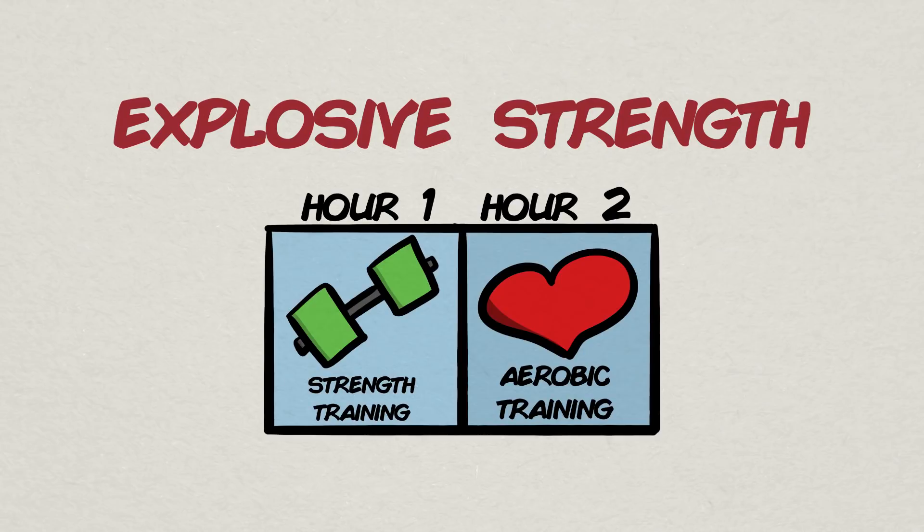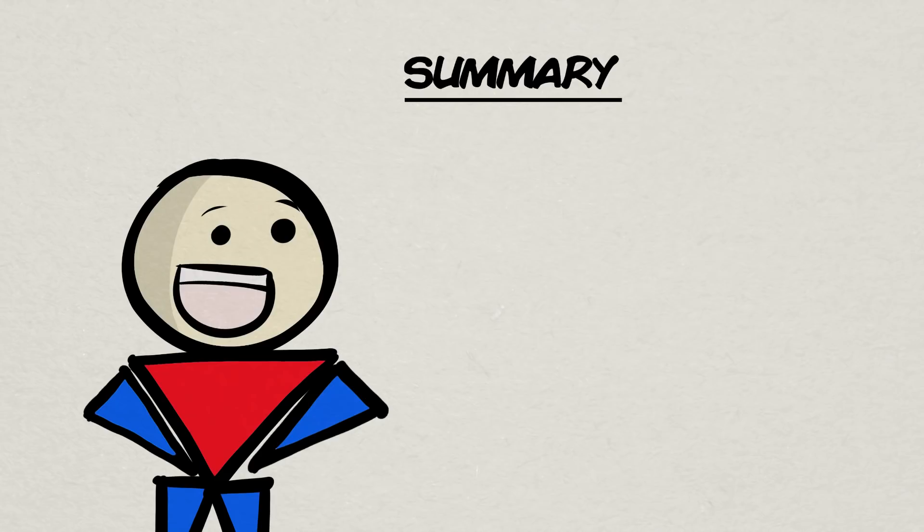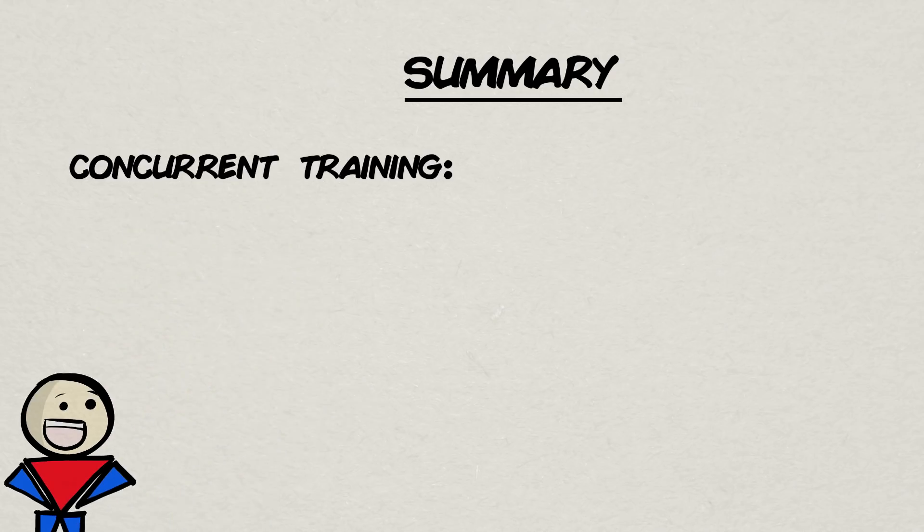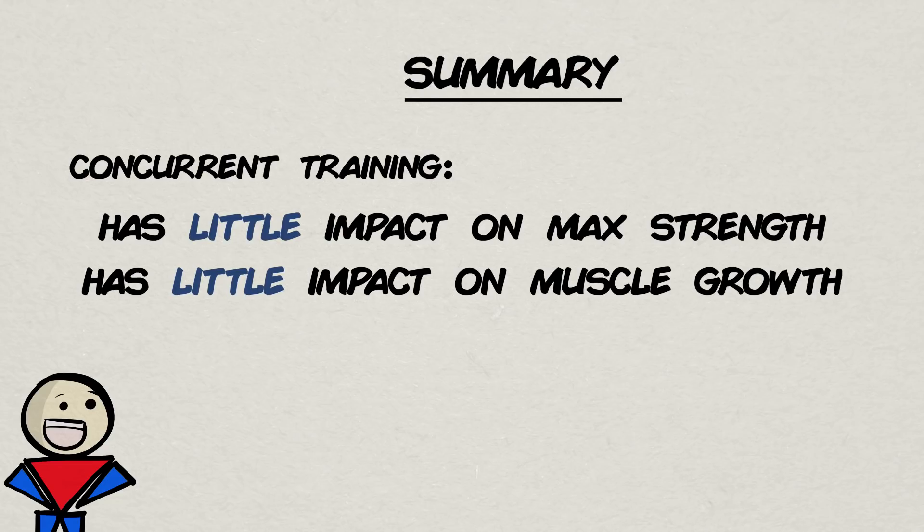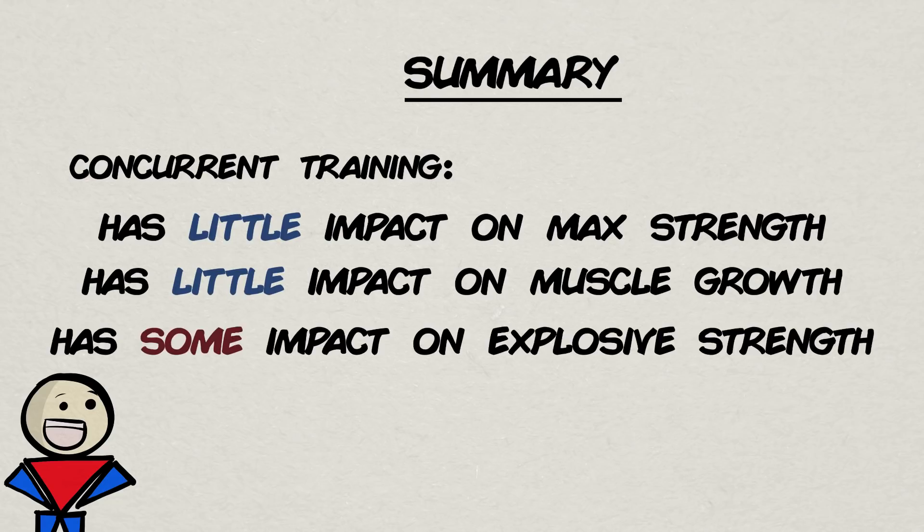At this point, the only thing that somewhat stood out was that same session concurrent training still led to weaker explosive strength adaptation, but not as bad as before. So, quick summary. Performing aerobic exercise alongside your strength training seemed to have little impact on your maximal strength and muscle gains. It might, however, have a slight impact on your explosive gains.